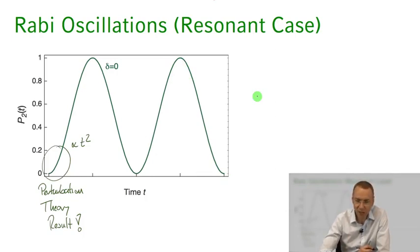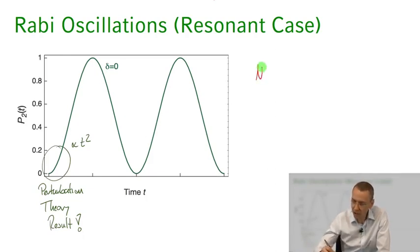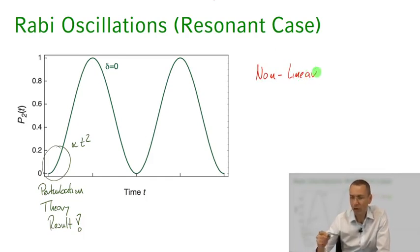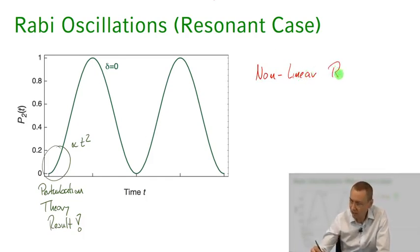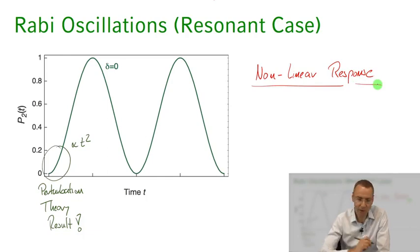So we actually see a very strong nonlinear response of our atom. As a function of time, I don't get more and more population in the excited state, but I get a very strong nonlinear response in the form of oscillations between the ground state and the excited state.